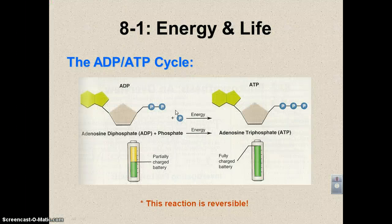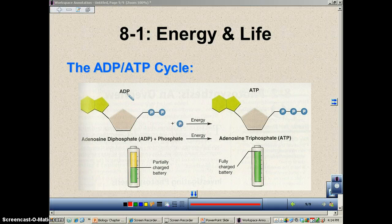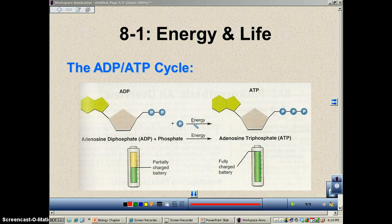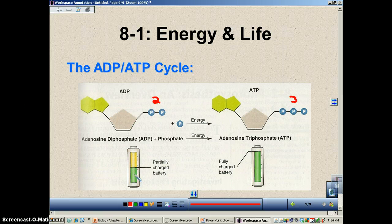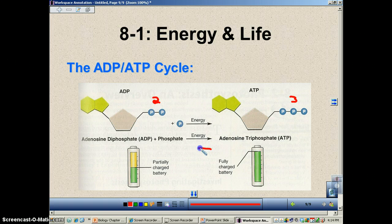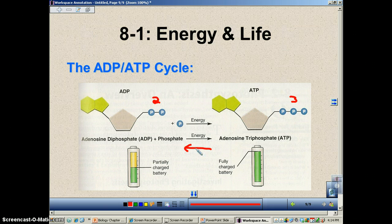In the textbook diagram, ADP has two phosphates and ATP has three — they use a battery analogy: ADP is a partially charged battery and ATP is a fully charged battery. This reaction is reversible. For chapter eight and companion chapter nine, we'll talk about the ATP cycle a lot, because if this cycle ever stops, that's the end of that organism.